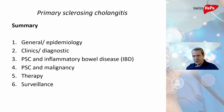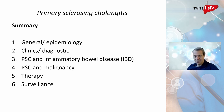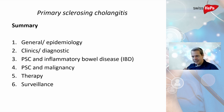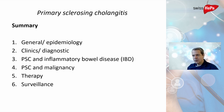Within the next 15 minutes or so we will discuss primary sclerosing cholangitis. We will go through the general history of patients with PSC and discuss epidemiology. We will discuss what clinical symptoms patients have, what diagnostic steps are involved, the association with inflammatory bowel disease and malignancy, and then therapy options and surveillance strategies.